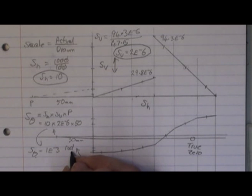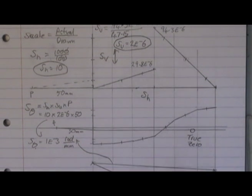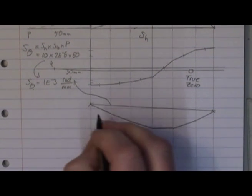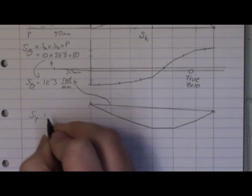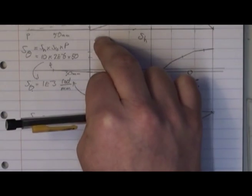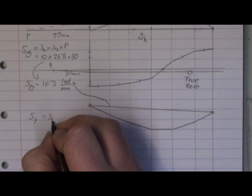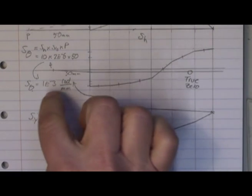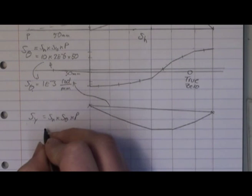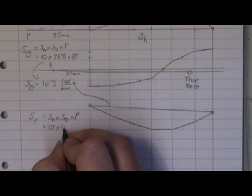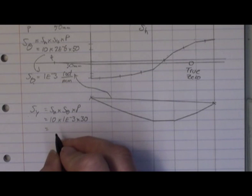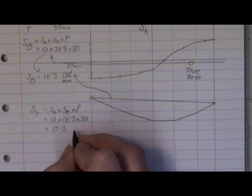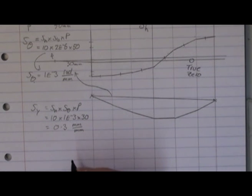For my deflection diagram, SY equals SH times S_theta times P — that is, 10 times 1 × 10⁻³ times 30 — giving a scale of 0.3 millimetres per millimetre, working in millimetre units throughout.